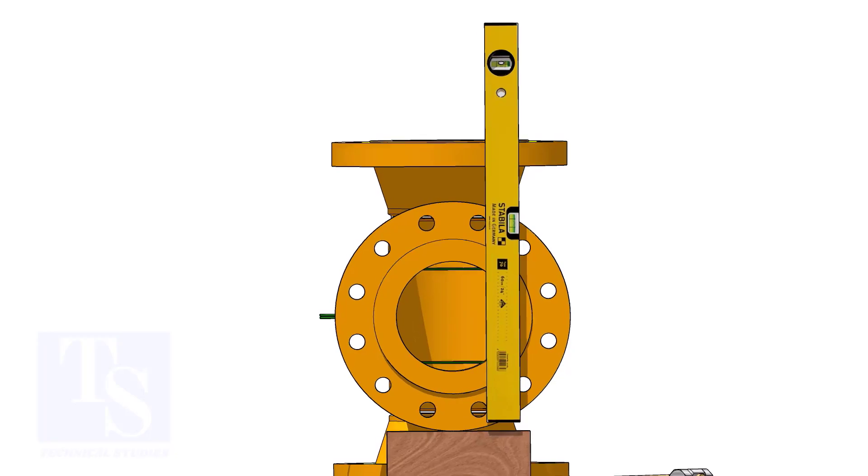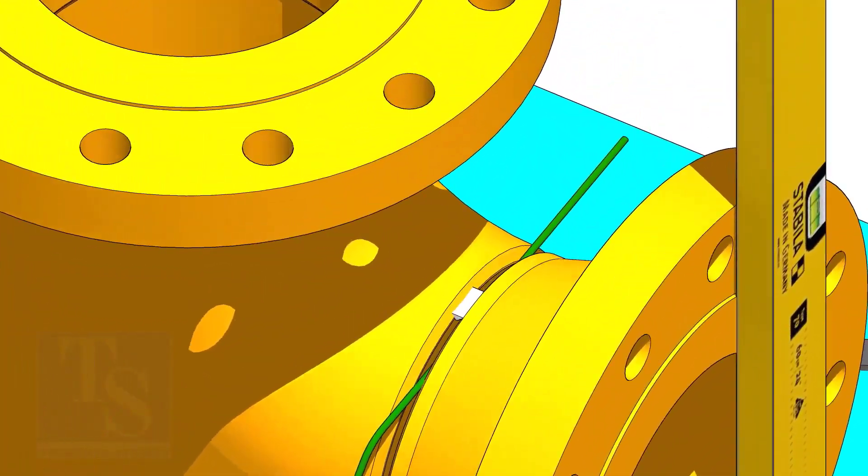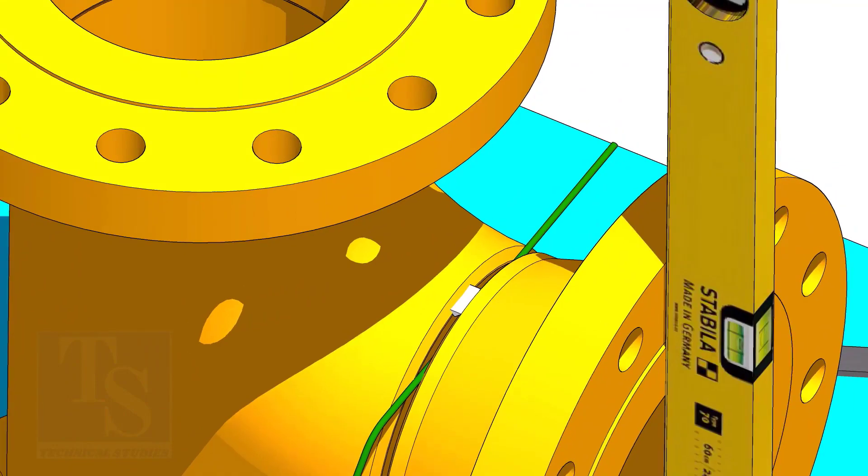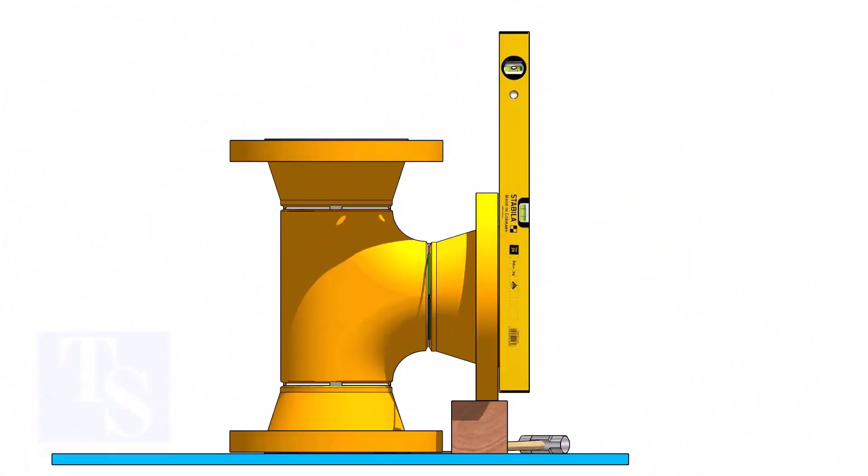Correct the plumbness of the flange holes as shown. Tack weld on the top side. Correct the flange vertically and tack weld below.